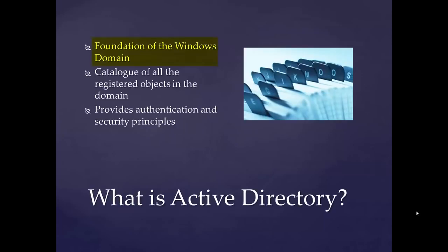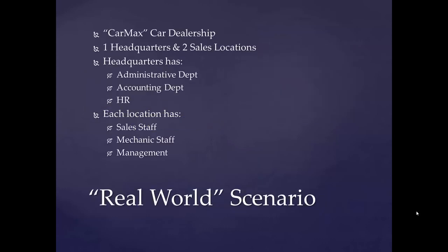Now that our server is a domain controller and we've installed Active Directory Domain Services, we now have to configure Active Directory. What is Active Directory? It is the foundation of the Windows domain — essentially a catalog of all the registered objects in the domain. It provides authentication services and security principles that allow users and computers to access the resources they've been granted permissions to. We're going to start with a real-world scenario using the imaginary CarMax dealership, which has one headquarters location and two sales locations. Headquarters has an administrative department, accounting, and HR. The two locations have sales staff, mechanics staff, and management.